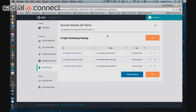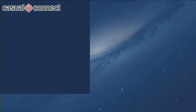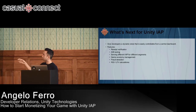I'm going to hop back to the presentation and talk about what's next for Unity IAP while we're waiting for that feature to load. Where we eventually see this product going is that we want to give developers a really dynamic store where you can do a lot of cool things, all controllable from a central dashboard. We built this for the developer community — these are features picked based on community feedback. If there's a use case we're not thinking about, please tell us, because we just want to build a cool product that you'll actually use.